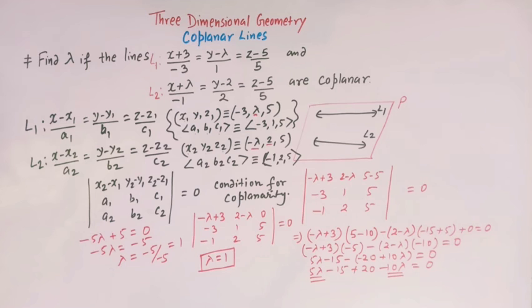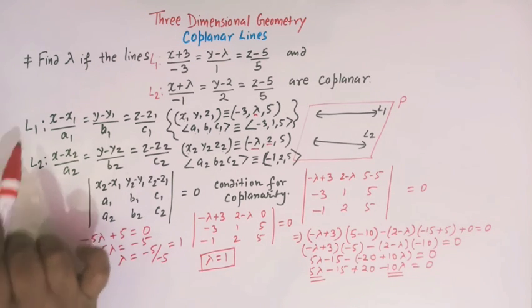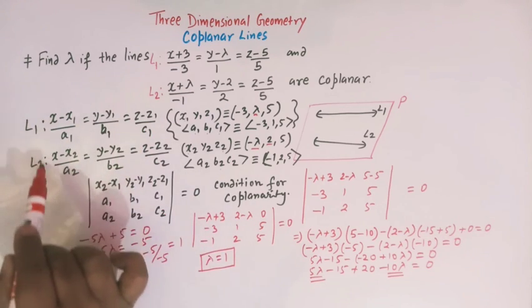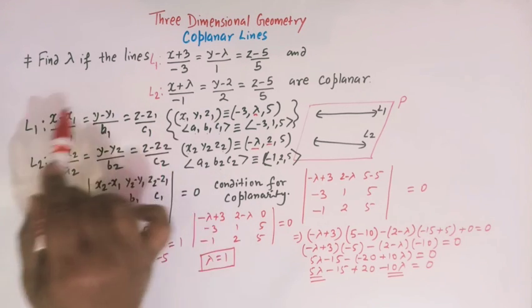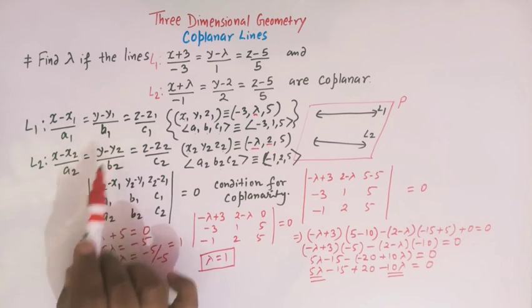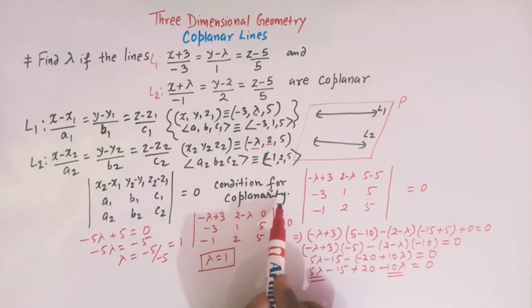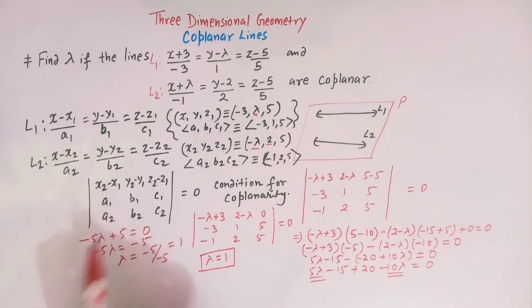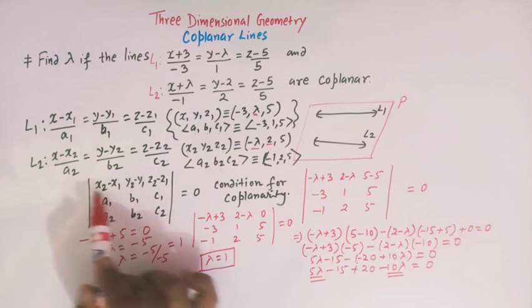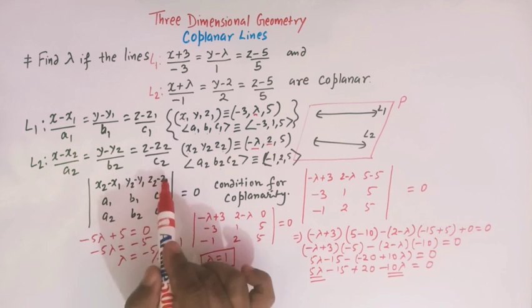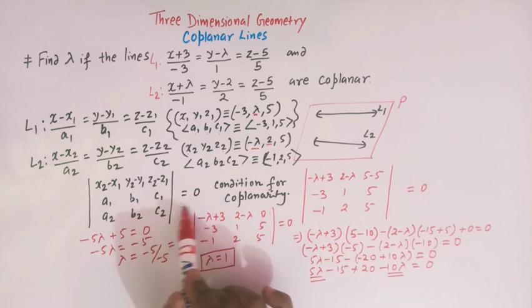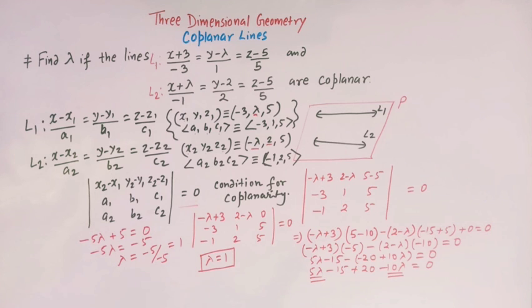So viewers, the value of lambda is 1, for which the two lines L1 and L2 are coplanar. Always remember: whenever two lines L1 and L2 are given in symmetrical form, the condition for their coplanarity is that the determinant equals zero. This is how we solve this type of problem.